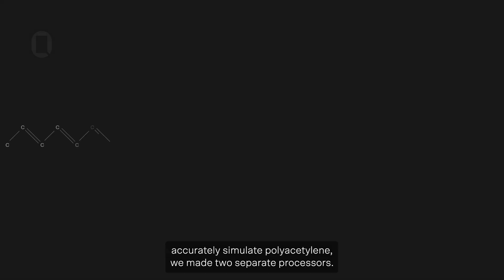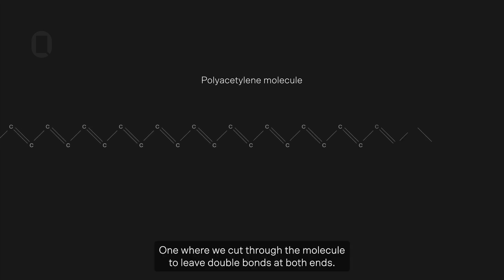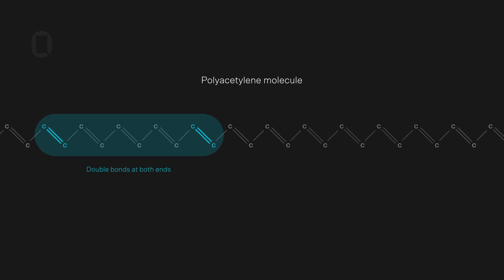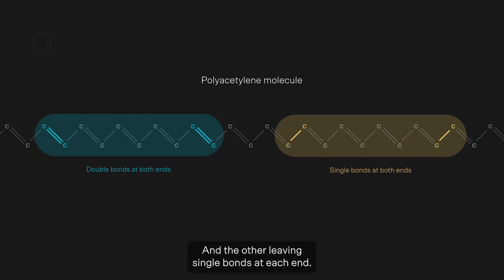To prove that we can accurately simulate polyacetylene, we made two separate processors. One, where we cut through the molecule to leave double bonds at both ends, and the other leaving single bonds at each end.